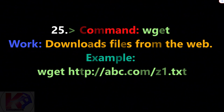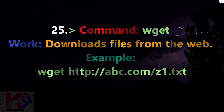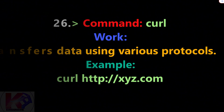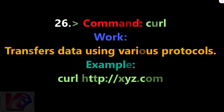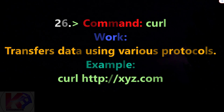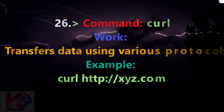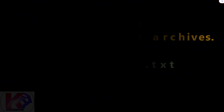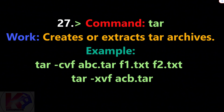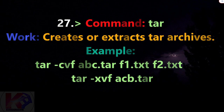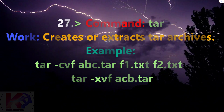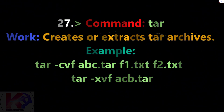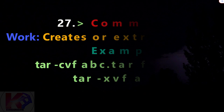Command wget: downloads files from the web. Example: wget http://url_path_of_the_file. Command curl: transfers data using various protocols. Example: curl http://url_path. Command tar: creates or extracts tar archives. Example: tar -cvf archive.tar files, or tar -xvf archive.tar.